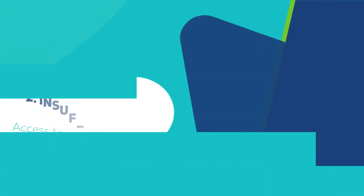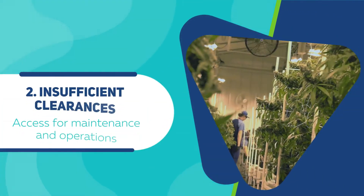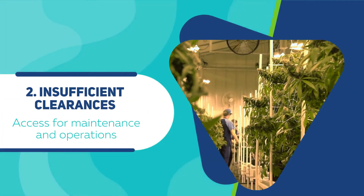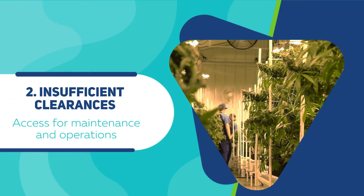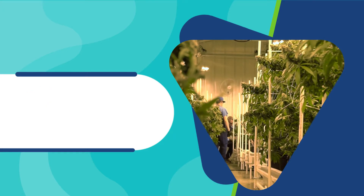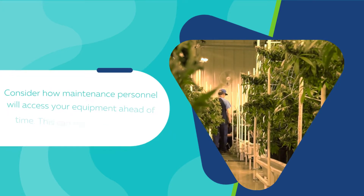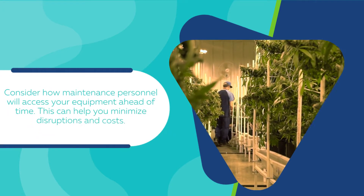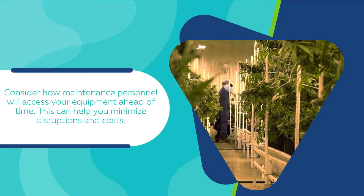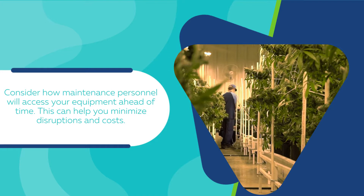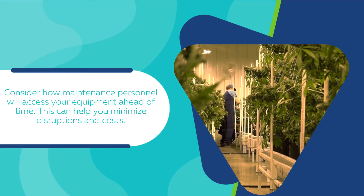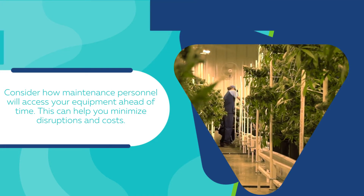Number 2: Insufficient Clearances. Access for maintenance and operations. Consider how maintenance personnel will access your equipment ahead of time. This can help you minimize disruptions and costs.